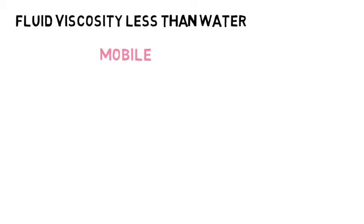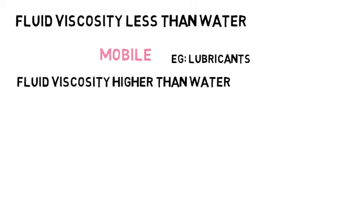So for the fluids having lower viscosity or less viscosity would be called as mobile, for example lubricants, nutrients. For the fluids having higher viscosity, higher than water, may be discussed as viscous materials.